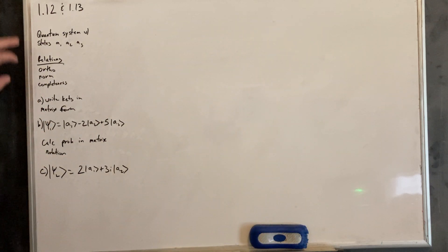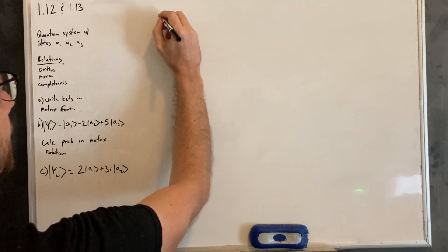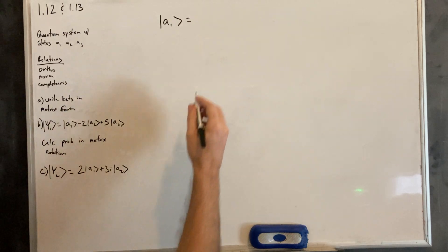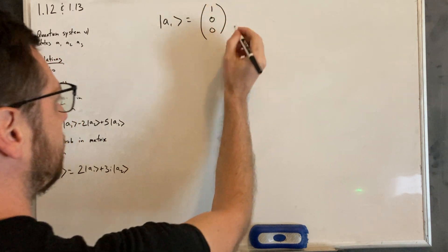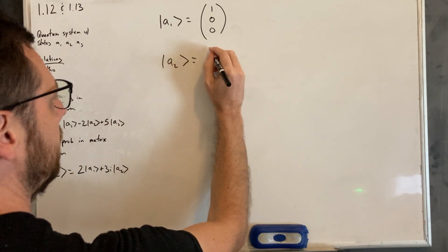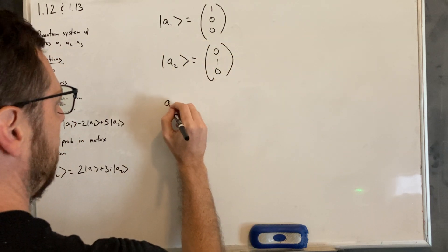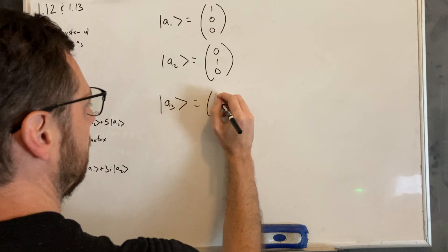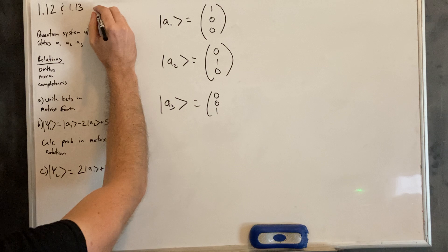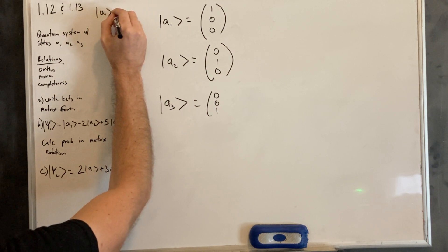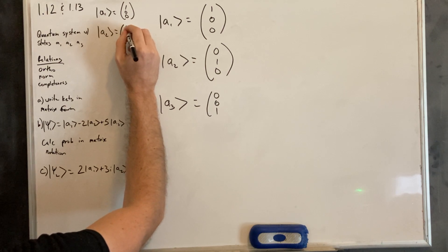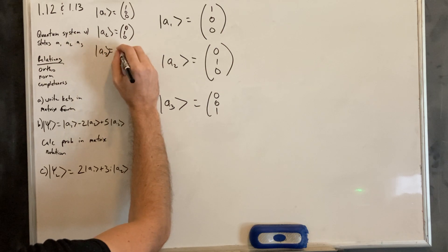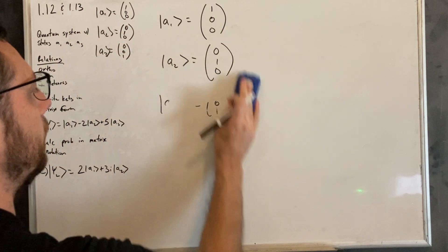Now for 1.13, same system A1, A2, A3. It says to write these kets in matrix form. We know there are going to be three states. So A1 we can choose the top entry to be one: one, zero, zero. A2 is going to be zero, one, zero. And A3 is going to be zero, zero, one. I'll put these up here since I'm probably going to need them again. A1 equals (1, 0, 0), A2 equals (0, 1, 0), and A3 equals (0, 0, 1). Those are our three matrices.